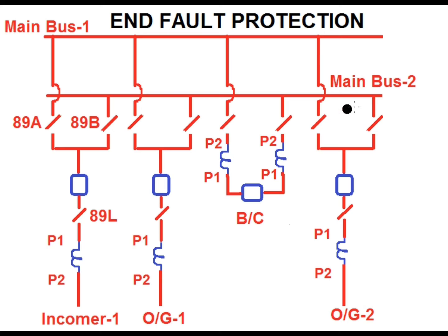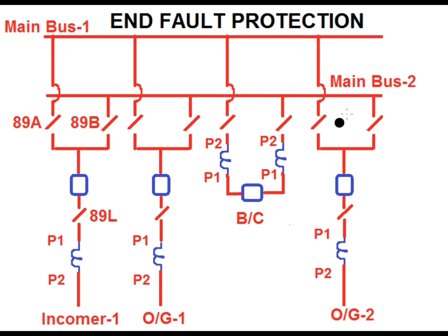Consider that this is a two main bus system and there are three feeders — one is the incomer and two are the outgoing feeders. 89A is the bus side isolator for main bus 1, 89B is the bus side isolator for main bus 2. These are the CT locations. This is the bus coupler bay with the breaker, 89A and 89B. The CT position is connected such that P1 is towards the bus side and P2 is towards the line side. For the bus coupler CT, P1 is connected to the protective object — main bus 2 for zone 2, and the other CT is for zone 1. These are the line isolators.